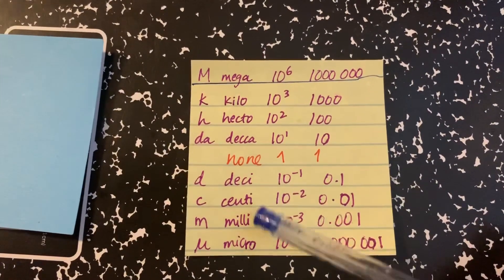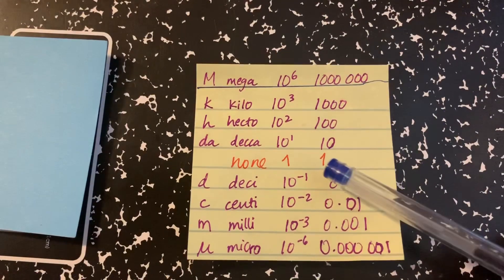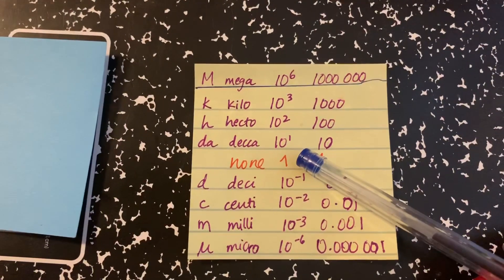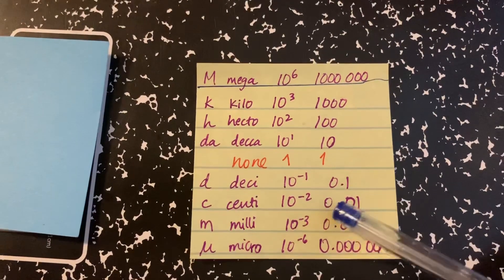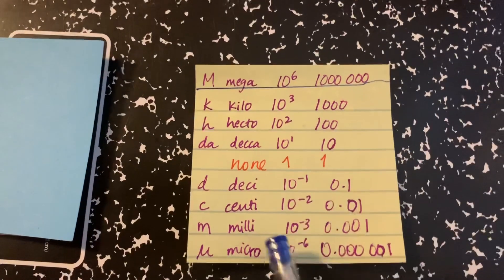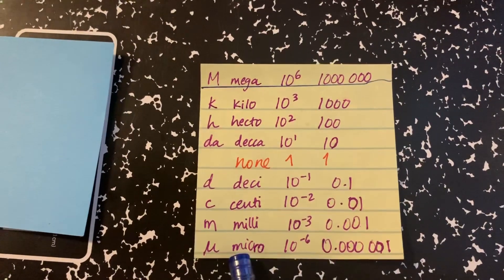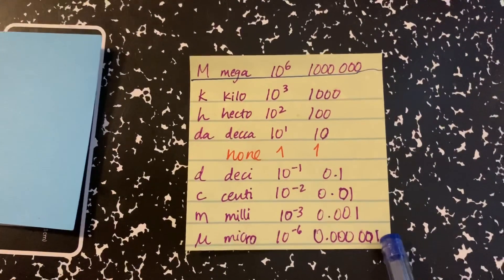Now if you have this keyword, such as DECI, that means 0.1 lower than if you start from here. Any unit that you start can be, for example, meters, can be liters. Then centi is 0.01 smaller, milli 0.001 smaller, and micro is 0.00001 times smaller.